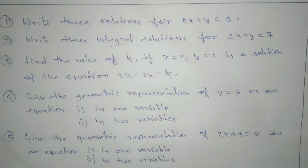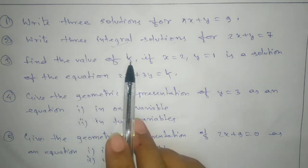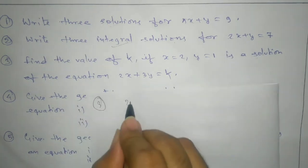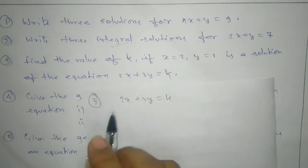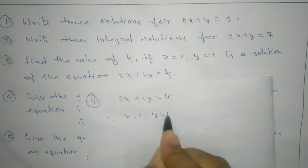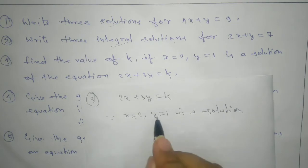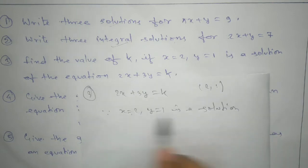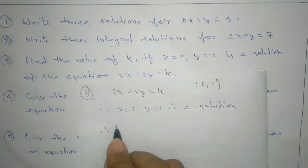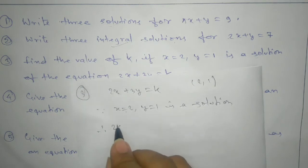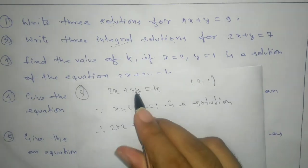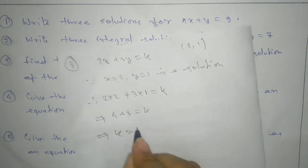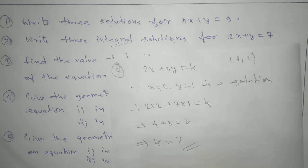The next problem: find the value of k if x equals to 2 and y equals to 1 is a solution of the equation 2x plus 3y equals to k. Since x equals to 2 and y equals to 1 is a solution, it satisfies the equation. So we substitute: 2 into 2 plus 3 into 1 equals to k. This gives 4 plus 3 equals to k, therefore k equals to 7.